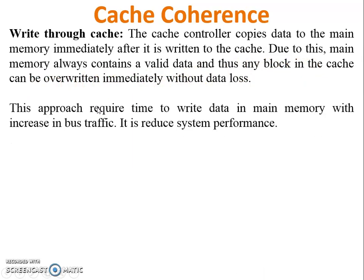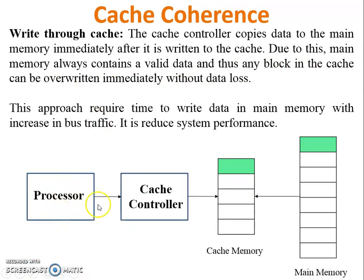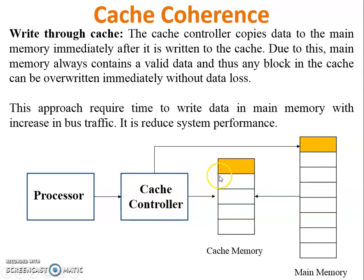In the diagram, before any modification, main memory and cache memory data are the same. When the processor gives changes to the cache controller, the controller writes or modifies data in cache memory, and immediately after, the same change is made in main memory. So both copies remain the same, protecting data. However, this approach requires additional time to write data to main memory.